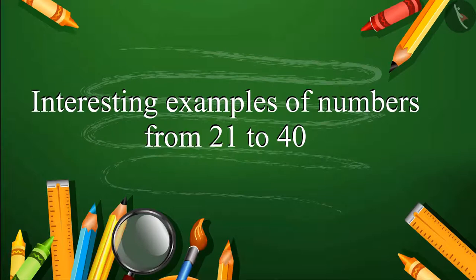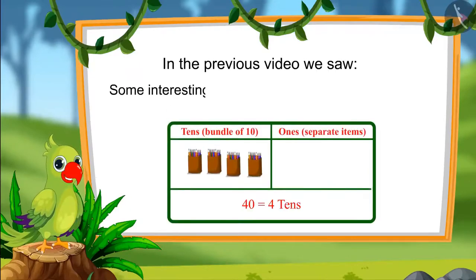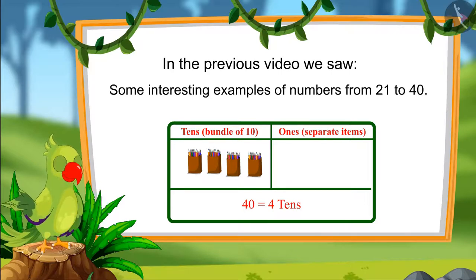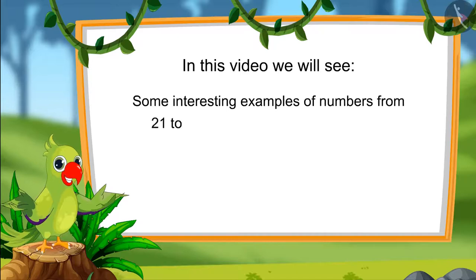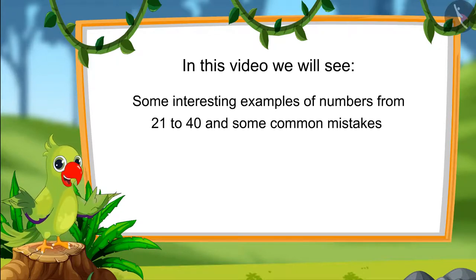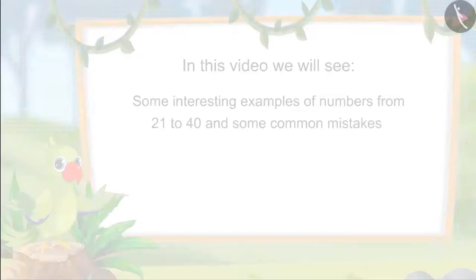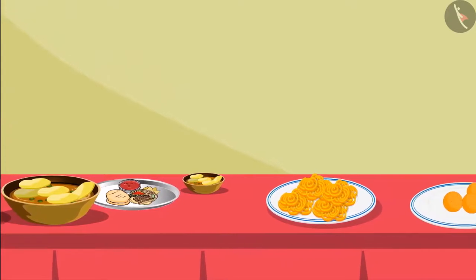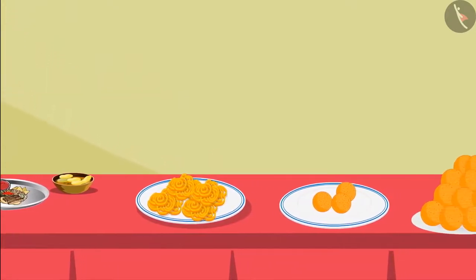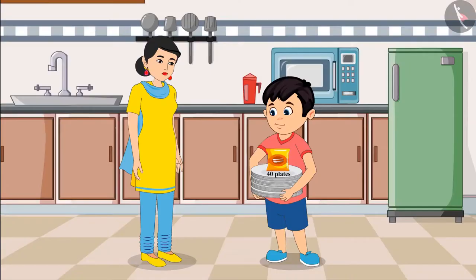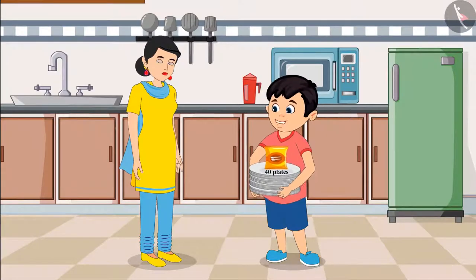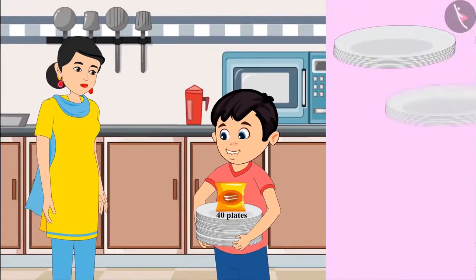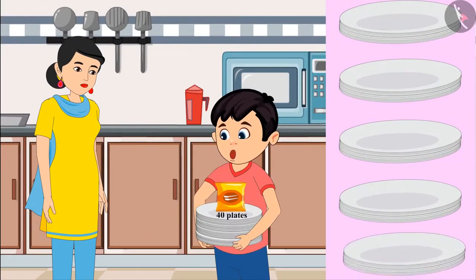Interesting examples of numbers from 21 to 40. Hello, children. In the previous video, we saw some interesting examples of numbers from 21 to 40. In this video, we will see some more interesting examples and learn about common mistakes which should not be done. Today, a lot of guests are coming to Chotu's house. Food is being prepared with excitement. Chotu's mother sent Chotu to the market to get paper plates and spoons. Chotu returned saying the packet is written 40 plates, meaning 4 groups of 10 plates and another group of 10 plates with it.